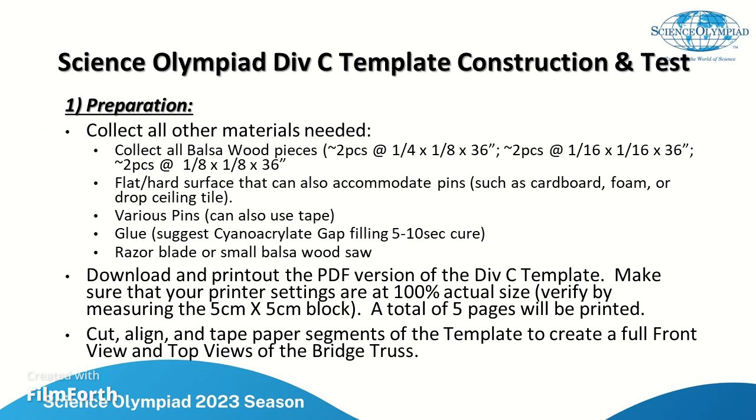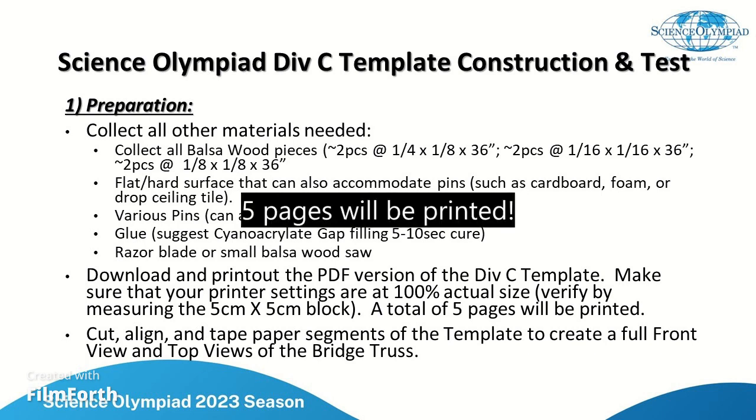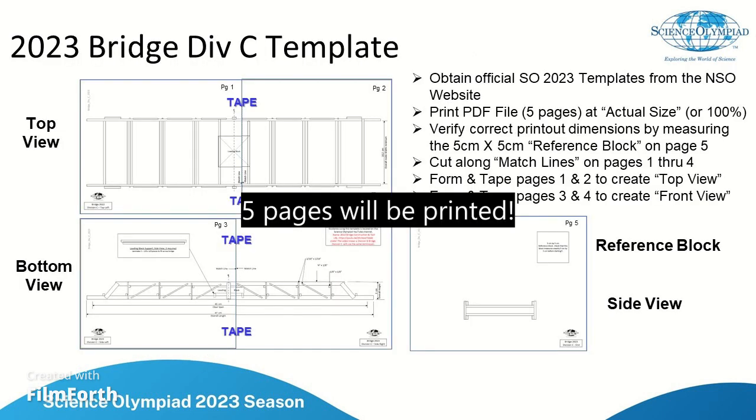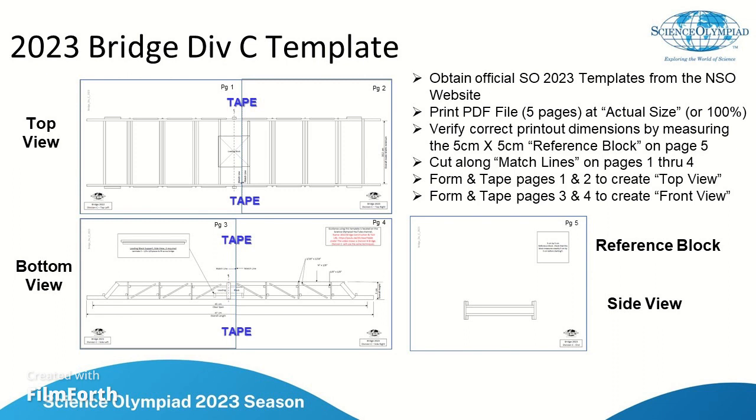The first step is to get prepared to build the bridge by collecting all the materials and downloading the Division C Science Olympiad template available on the website. You'll print that PDF file at actual size. It will give you six pages of 8.5 by 11 inch paper to piece together and create a full size diagram of the front and top views of the bridge.